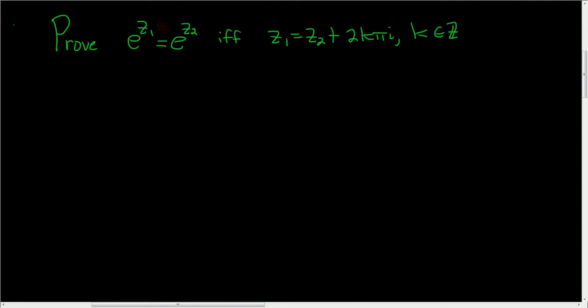We're being asked to prove this statement. This basically shows that the complex exponential function is not one-to-one. We're showing that e to the z1 is equal to e to the z2 if and only if z1 is equal to z2 plus 2k pi i, where k is an integer. Let's go ahead and prove this.